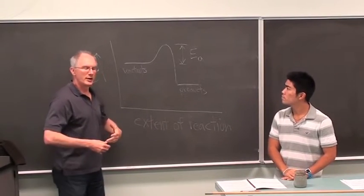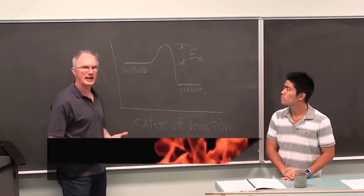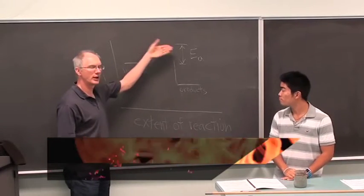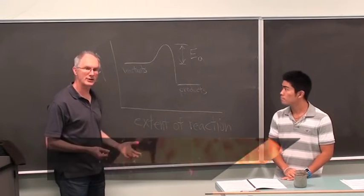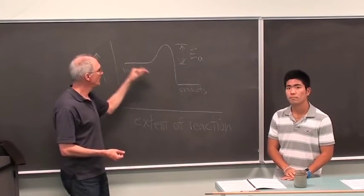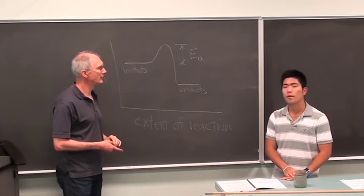So chemical reactions, if you heat them up, they tend to go faster because more molecules can get over that barrier. If you want to slow a reaction down, you cool it down—molecules won't have enough energy to overcome that barrier.